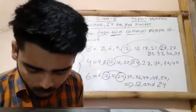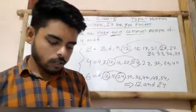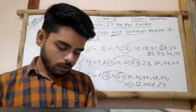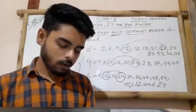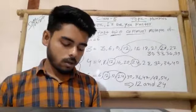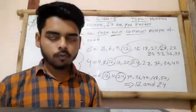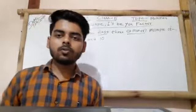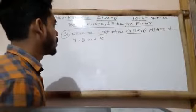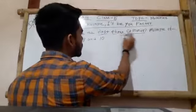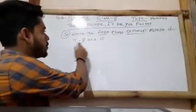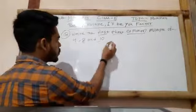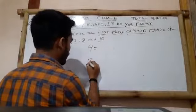Now I am going to take another type of question from this chapter — write the first three common multiples of three numbers. You have to follow the same process to determine this. The next question asks you to determine the first three common multiples of 4, 8, and 10.